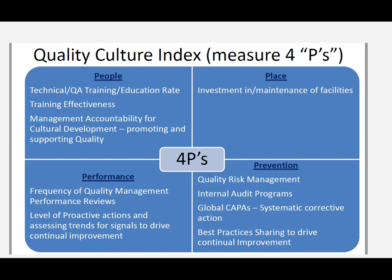The fourth P is Performance and Prevention. Prevention through quality risk management, internal audits, CAPAs, and best practices will help prevent issues. Performance is assessed through the frequency of quality management performance reviews, the level of proactive actions taken, and assessing trends for signals to drive continual improvement.